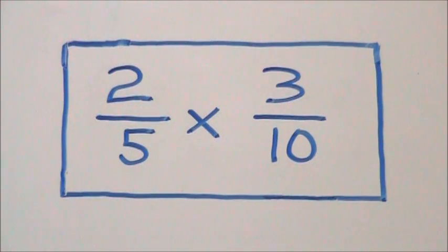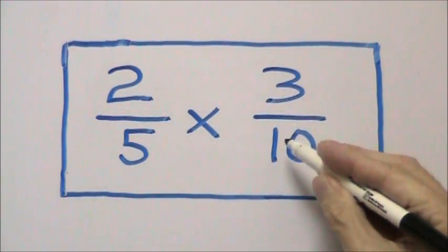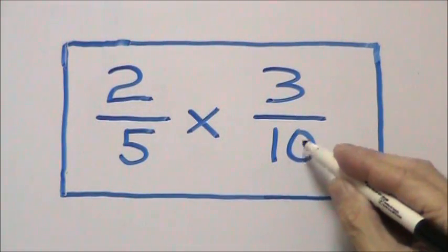In order to cross-cancel, the numerator of one fraction has to be a factor of the denominator of the other fraction.